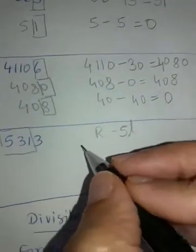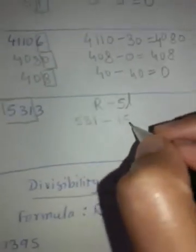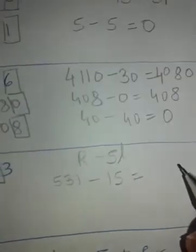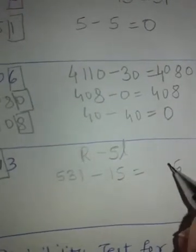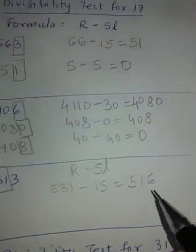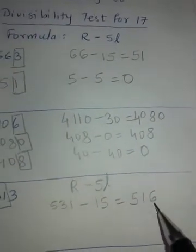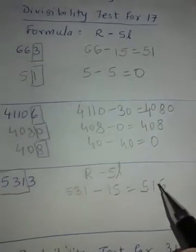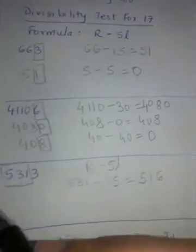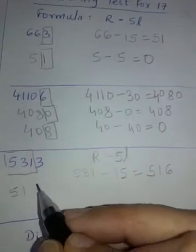531 is the remaining number, minus 5 times 3 is 15, which comes out to 516. Now here itself if I divide, see 17 times 3 is 51 and then remainder will be 6, that means this number is not divisible by 17, but you can copy this and try again.